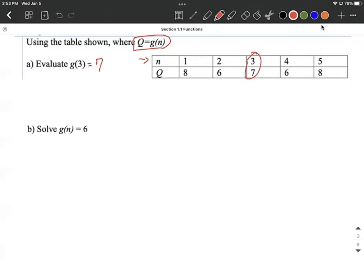Now on the other half of this we want to be a little bit careful on part b that g of n equals 6. So 6 is not an input value. It's not inside the parentheses replacing the n. It's actually g of n equals 6. And by how they define this, remember Q equals g of n.